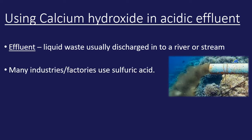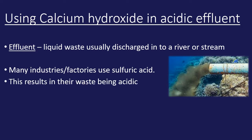Many factories and industries use sulfuric acid at some point in their process, and what can happen is that this can lead to the effluent being acidic. If you were to just leave the effluent acidic, it's going to cause an awful lot of damage to the environment around it by lowering the pH of the water. So what needs to happen is we need to increase the pH of the effluent so that it's no longer acidic.